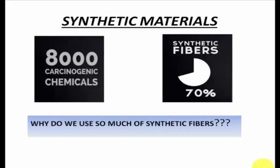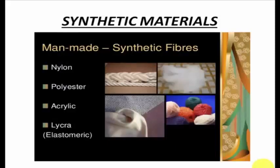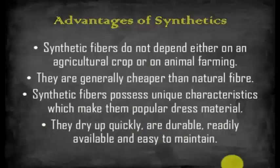The man-made synthetic fibers include nylon, polyester, acrylic, and lycra — these are various synthetic fabrics that people wear. We use synthetic fabrics because they do not depend on an agricultural crop or animal farming; they can be artificially produced in a laboratory. They are generally very cheap because they are created in a laboratory and do not come from natural fiber, unlike cotton or khadi fabrics which are costly.